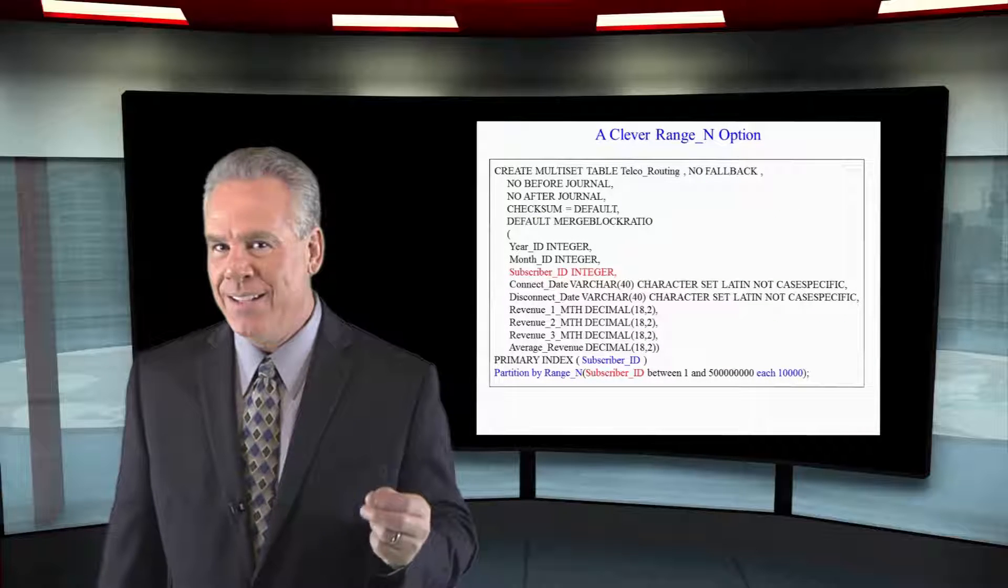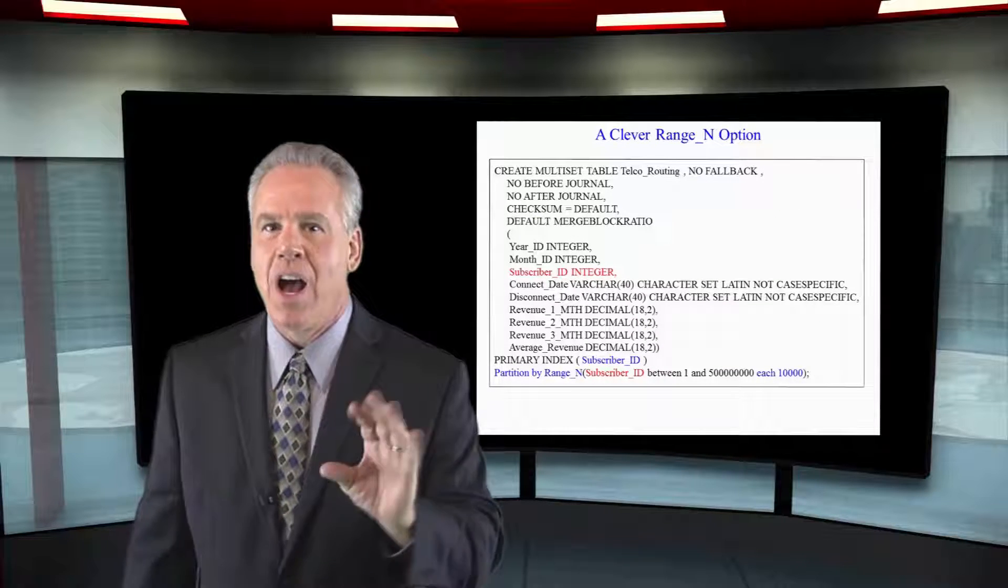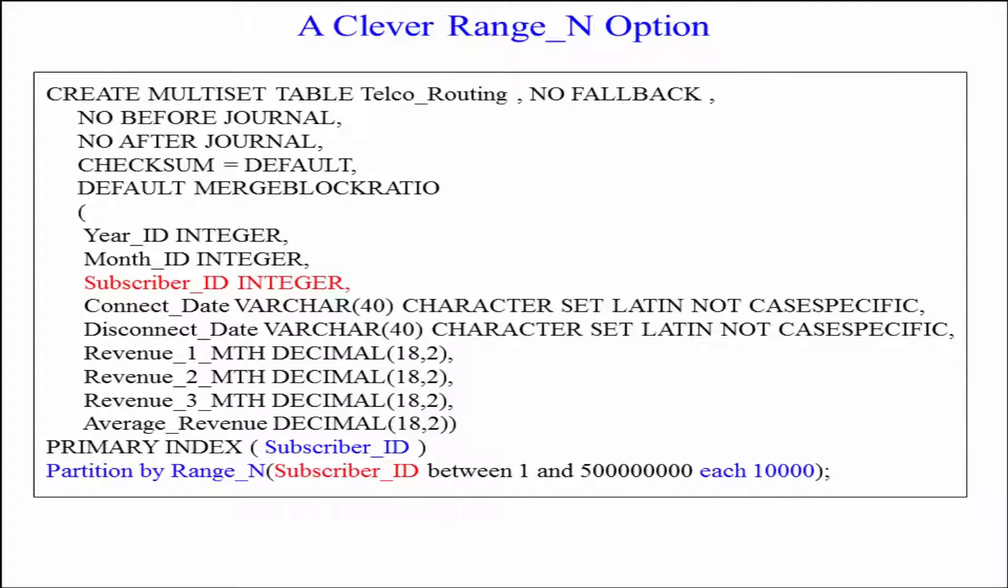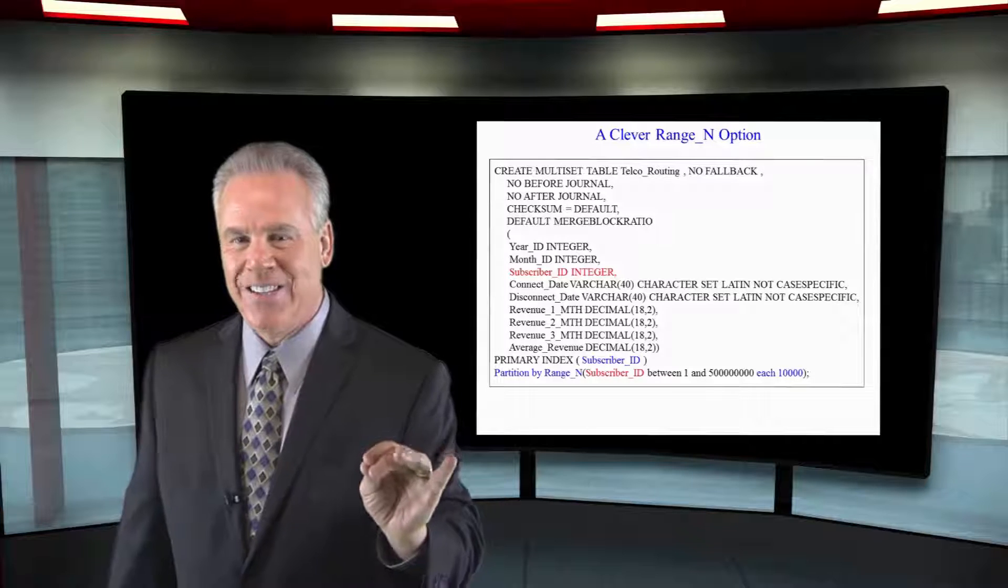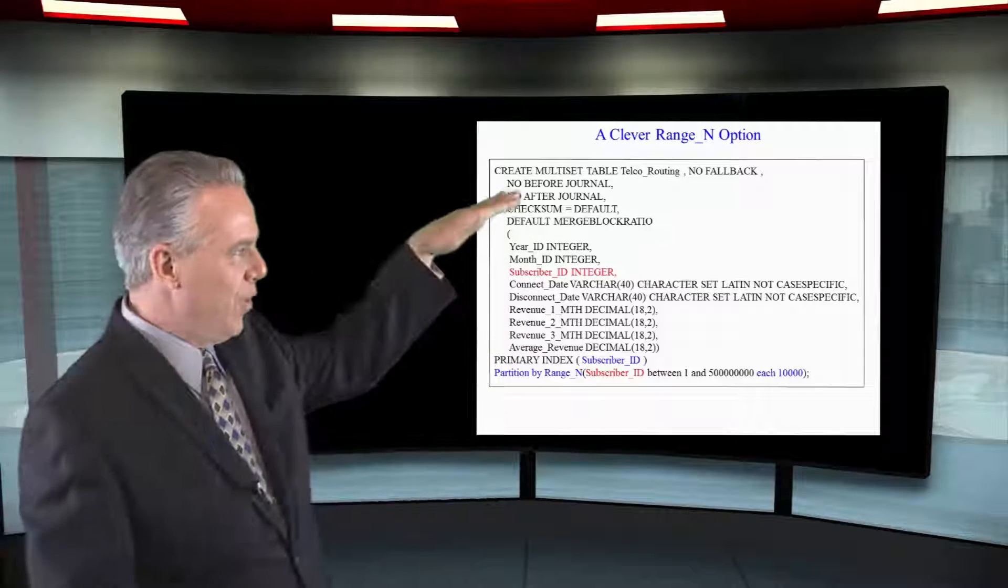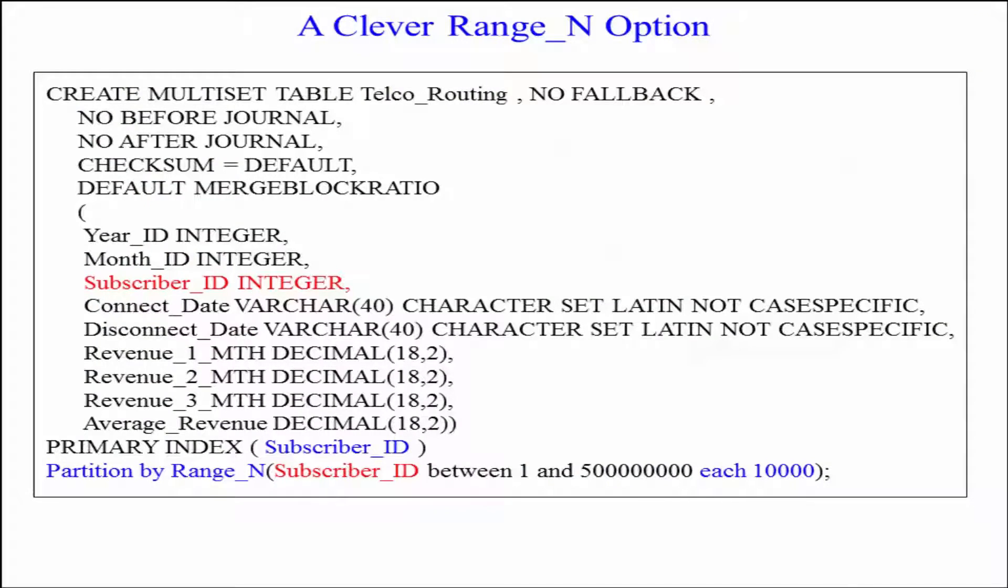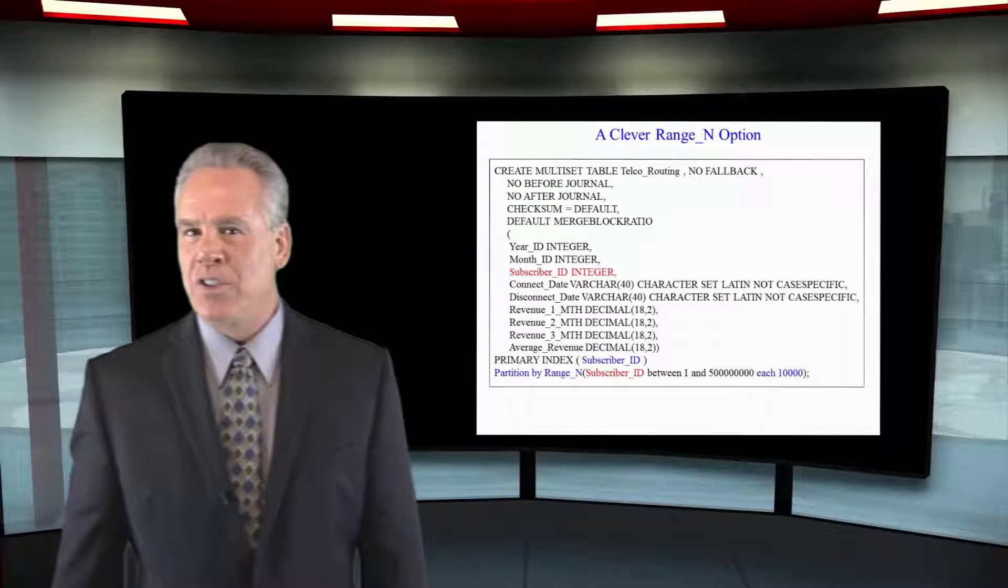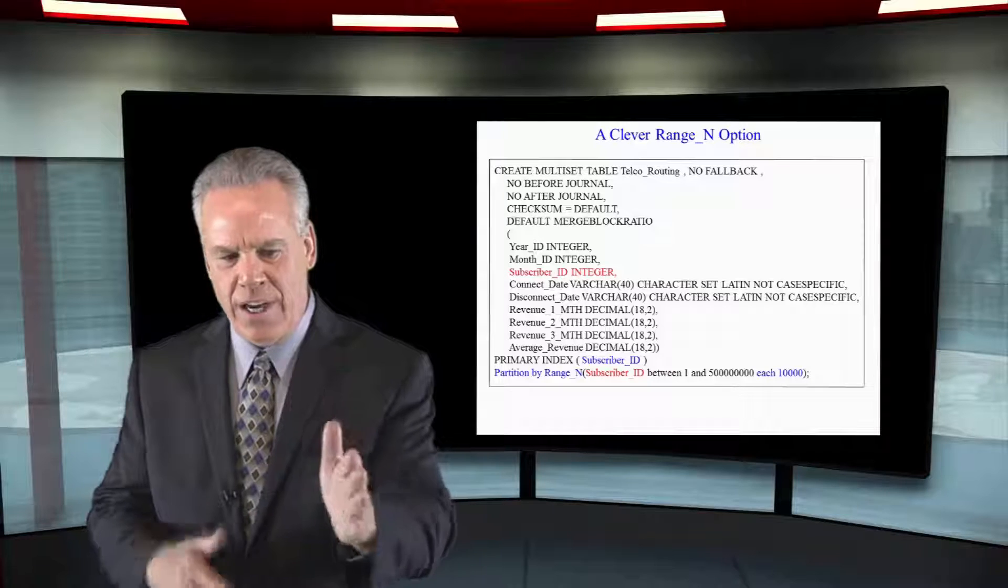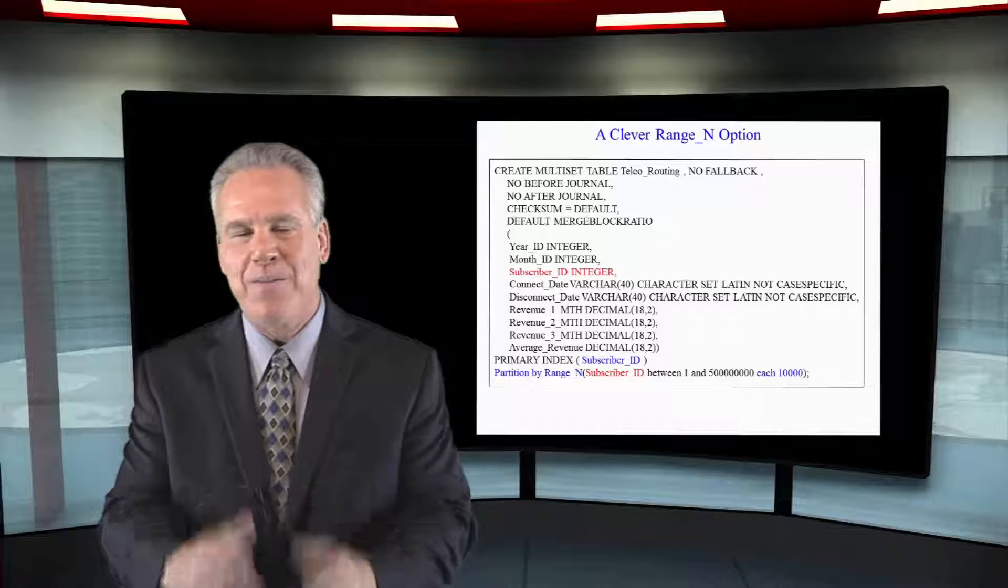In this amazing PPI demonstration, I want you to notice what I'm doing. I'm taking and partitioning by a range and the subscriber ID between one and 500 million subscriber IDs, each interval 10,000. So this is going to break up those subscriber IDs on each one of those AMPs in packets of 10,000. So anytime somebody's querying and they want to know all of the subscribers between here and here, it's not going to be a full table scan.